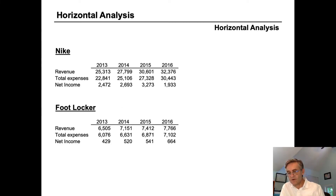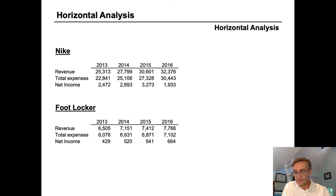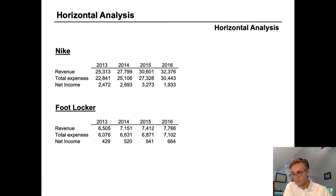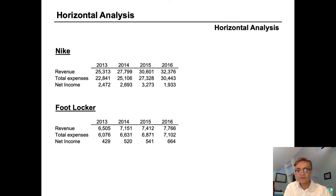Horizontal analysis can also be useful when we compare one company to another. Here, for example, is Nike again but compared with Foot Locker. Right away we can see that Nike is a significantly larger company — at 32 billion dollars, Nike's revenue is more than four times Foot Locker's 7.7 billion. Nike grew from 25 to 32 billion while Foot Locker grew from 6.5 to 7.7 billion in the same period. This can be hard to compare in raw form, but horizontal analysis can help.